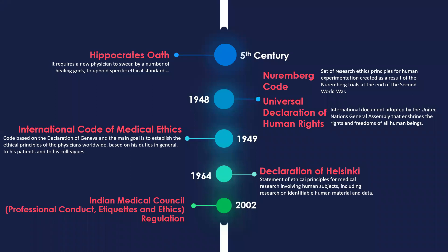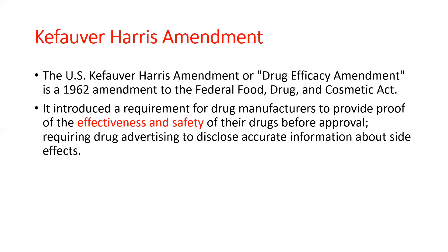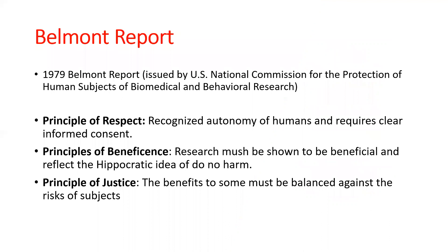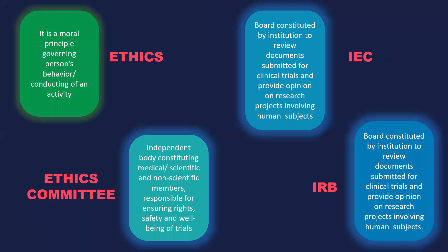Student: Can you explain more about the Belmont Report? The Belmont Report is the ethical principles and guidelines for protection of human subjects of research. It was the first document to talk about the protection of human research subjects. It basically summarized the ethical principles from whatever went wrong in the past. I will be discussing around 15 principles surrounding the Belmont Report in the coming slides.